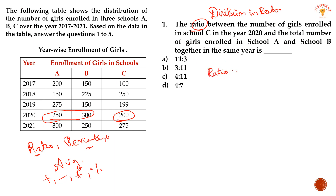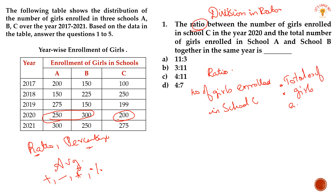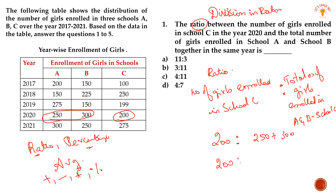So, the ratio of the number of girls enrolled in schools A and B together in the same year to school C. The number of girls enrolled in school C is 200. The number of girls enrolled in A and B in the same year together: 250 plus 300. That gives us 200 is to 550.